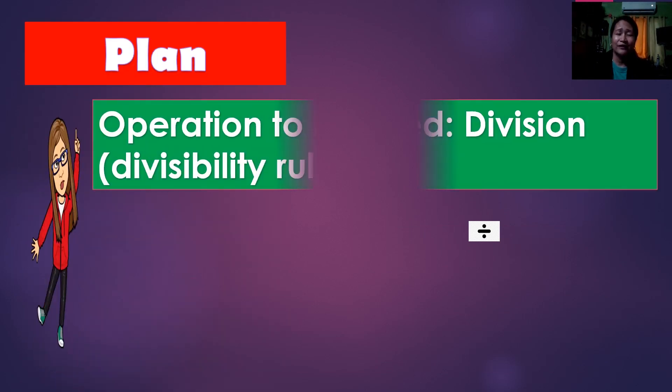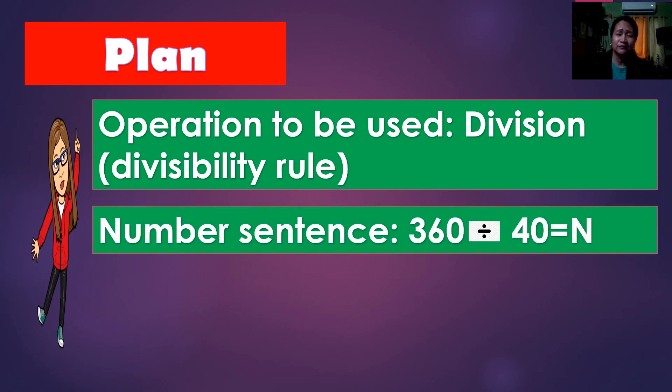Okay, under plan, we have operation to be used. Yes, division. And we have also to apply the divisibility rule. The number sentence, we have 360 divided by 40 equals N.